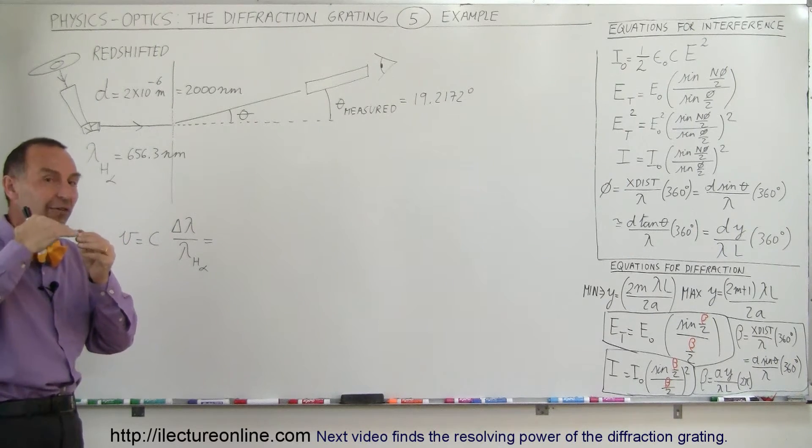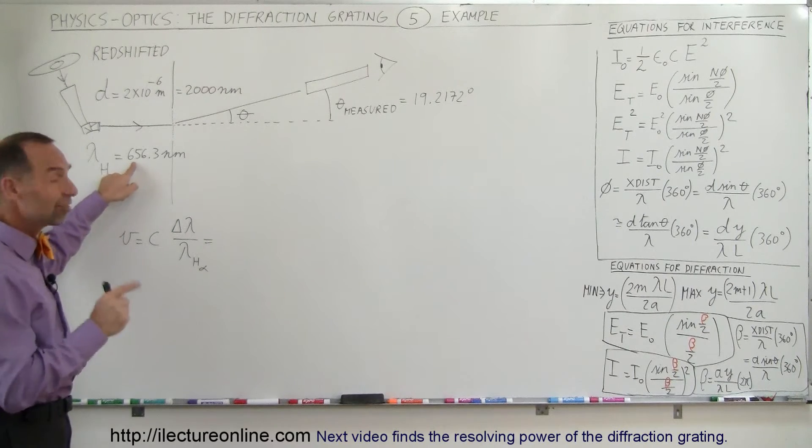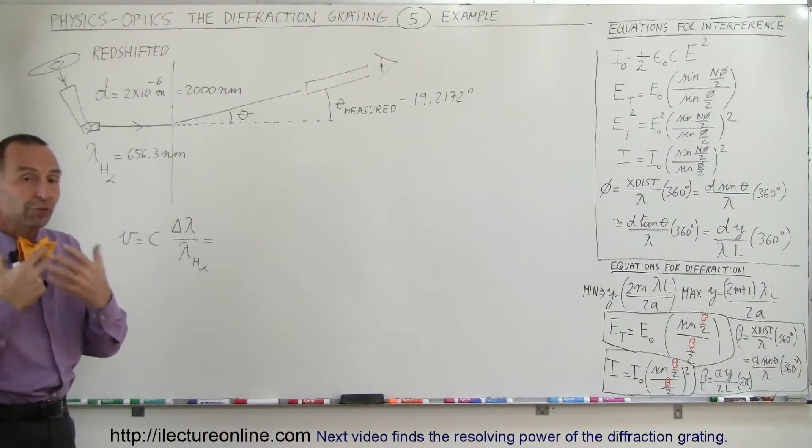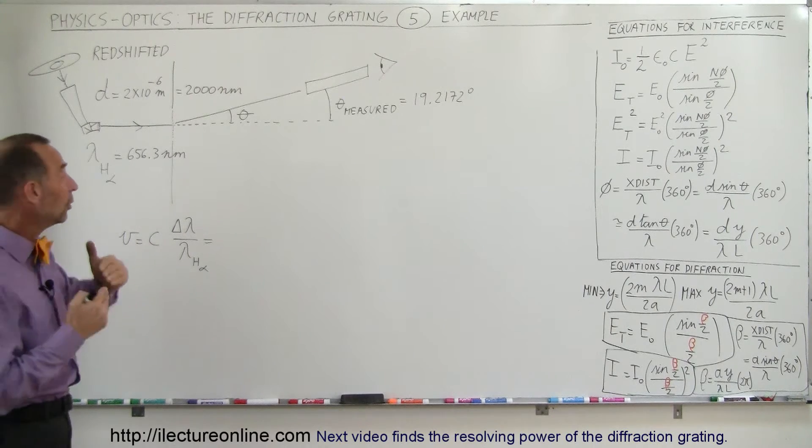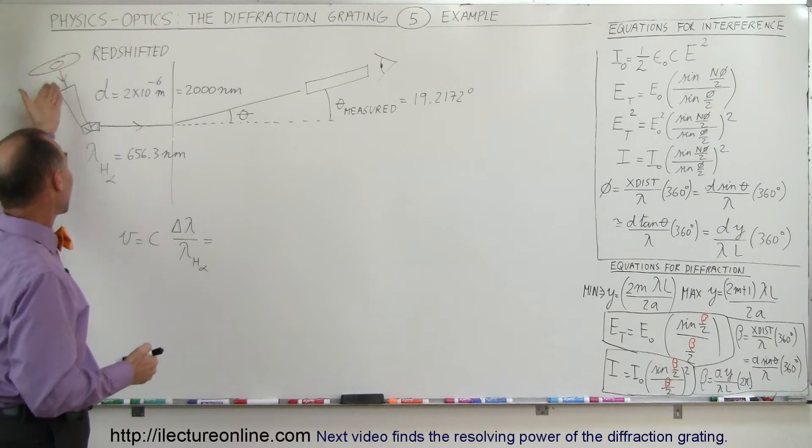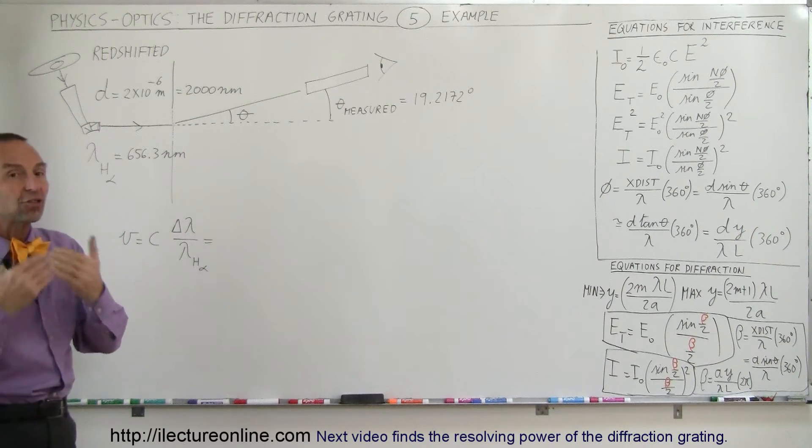When an electron jumps from the third to the second level in the Balmer series, it sends out a wavelength of exactly 656.3 nanometers, a photon with that particular wavelength. Now what we know is that when the galaxy is moving away from us, the light from that will be shifted, and we're able to figure out how much that shift is.